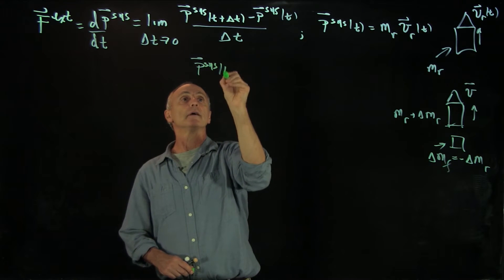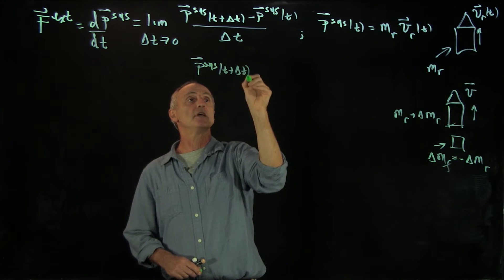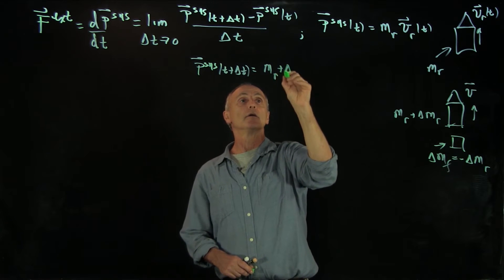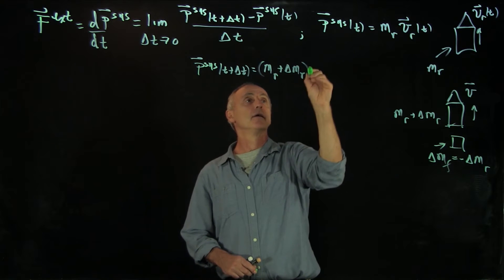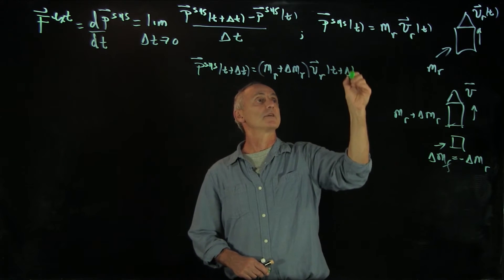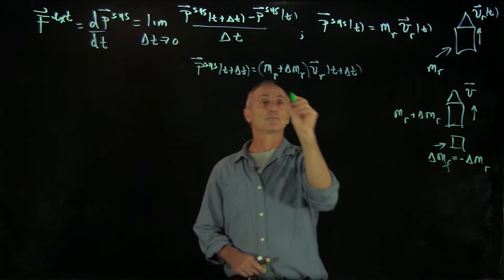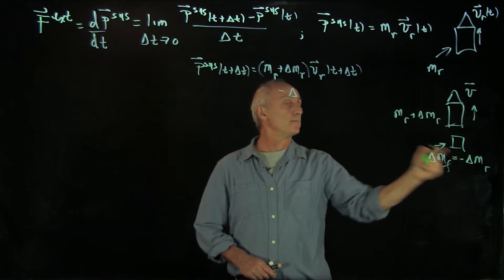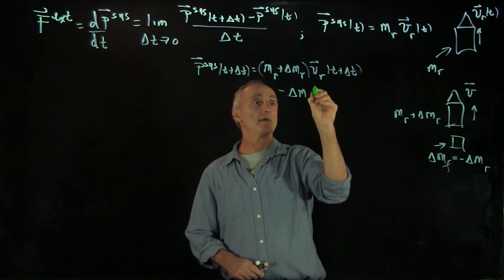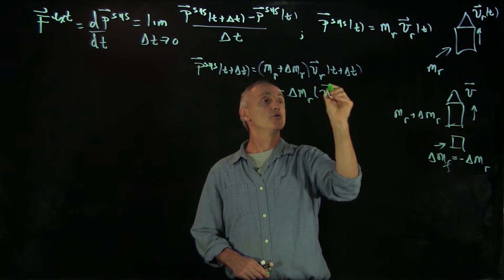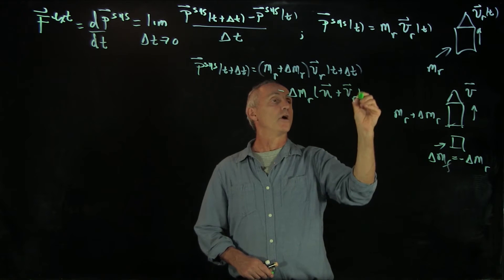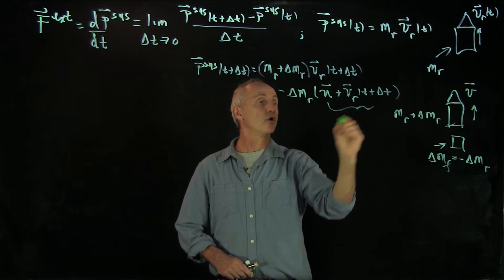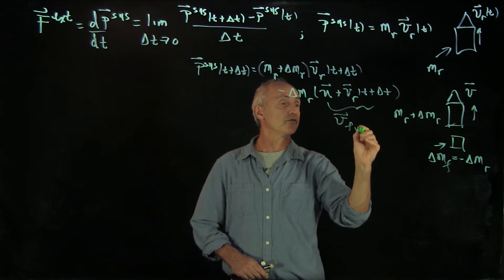P system at t plus delta t had two pieces. It had mr plus delta mr times v of r of t plus delta t, and we were subtracting. Now, because we made this change, that's minus delta mr times u plus v of r of t plus delta t. And this was the velocity of the fuel.